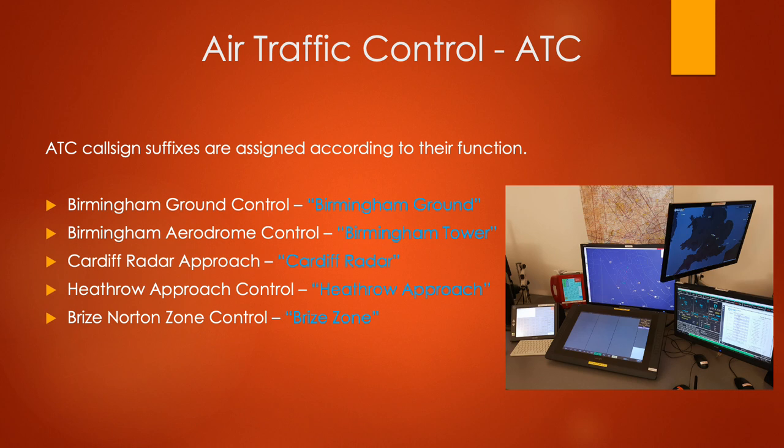Now we're going to look at the air traffic control services and their callsign suffixes assigned to each station. Each station has a name derived from its location followed by what service they're offering. For example, Birmingham Ground is a ground controller offering guidance and control to aircraft solely on the ground.